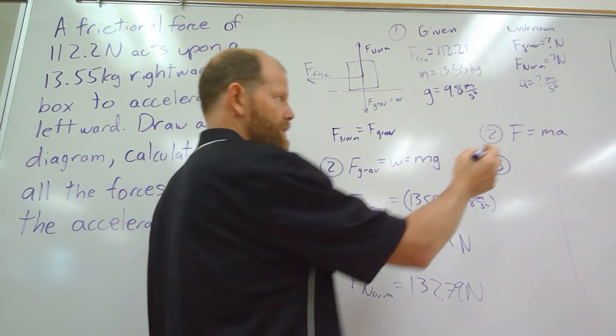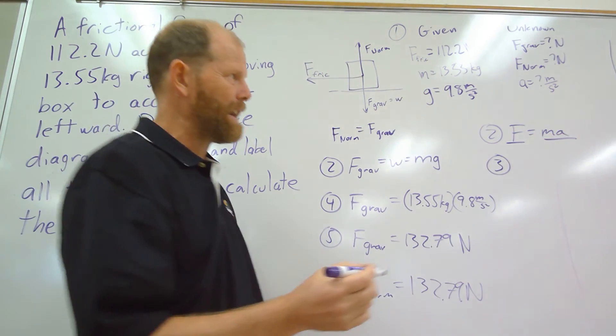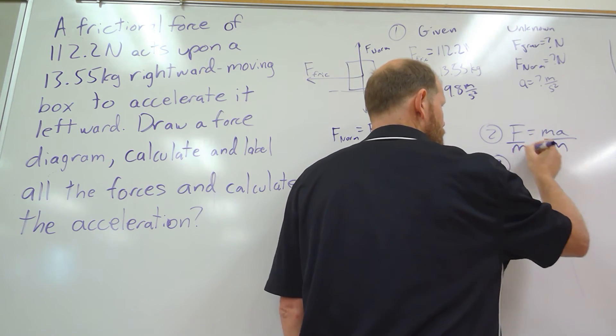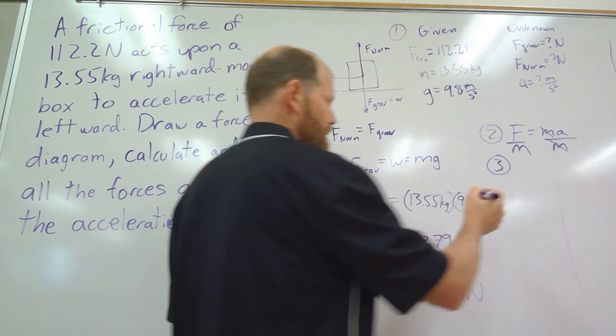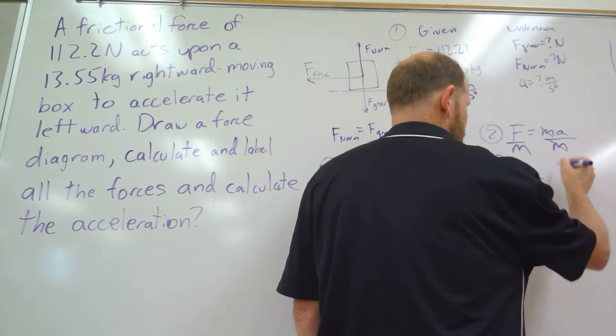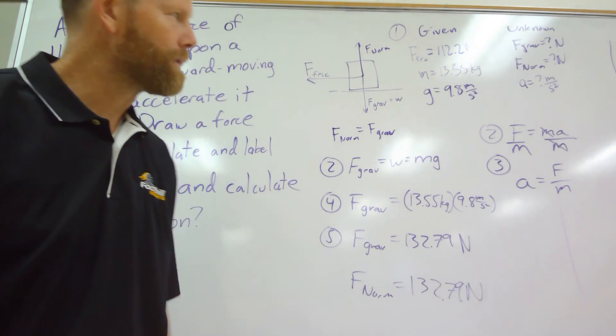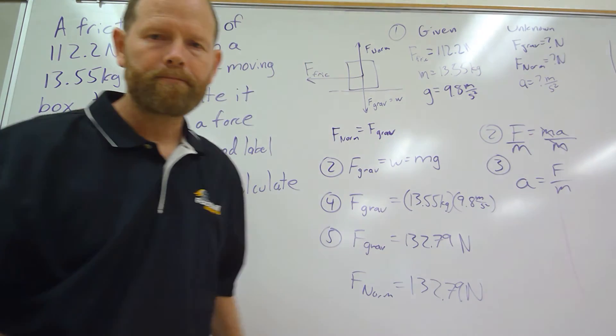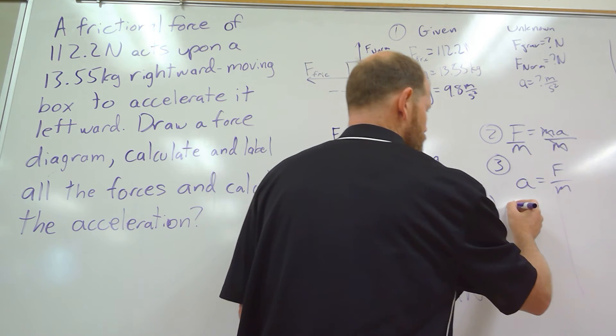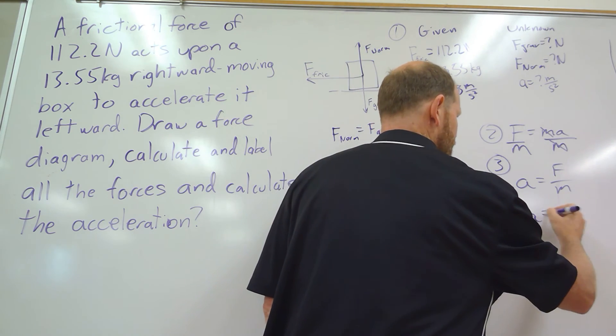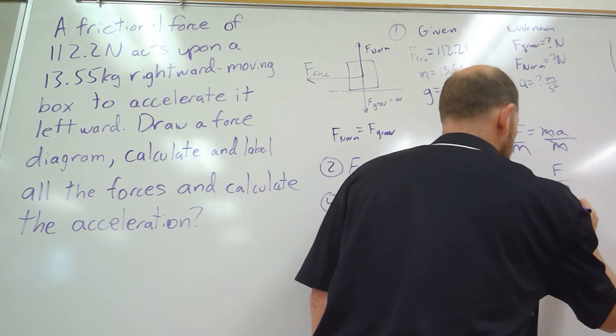So first we're going to have to rearrange here to solve for a. That means we're going to have to get a by itself, so we're going to have to divide both sides by m. So the m divided by m gives us one, which just gives us a. I'm going to rewrite that with the a on the other side just because I like it on the left, but a equals F over m—we got that through algebra. Then we can plug in to our equation a equals our force of friction, which remember was our net force, which was 112.2 newtons. Then we are going to divide that by m.